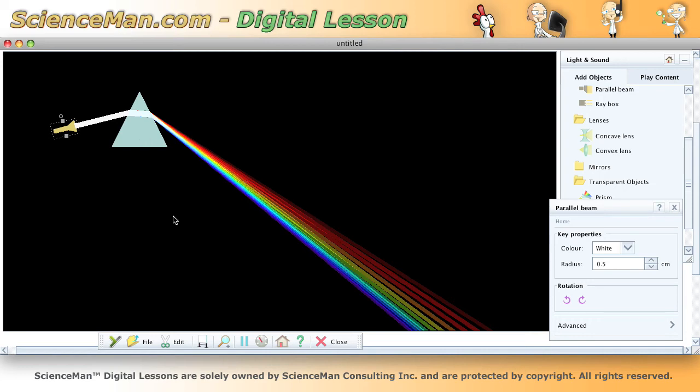And of course this is due to refraction. The white light, as it enters the prism, is refracted due to the difference in density from the medium outside the prism to the medium inside the prism and then outside again.